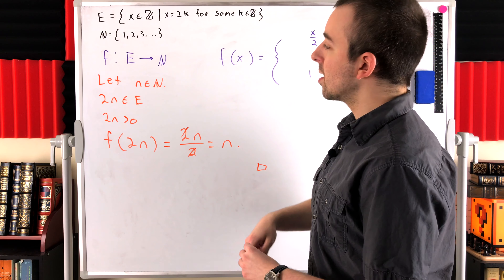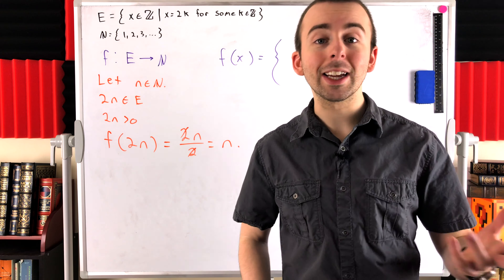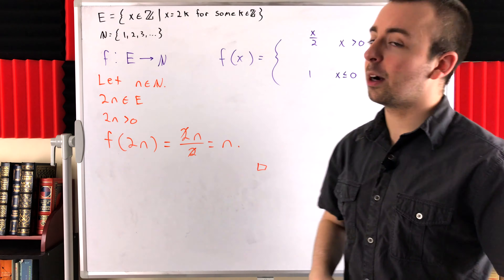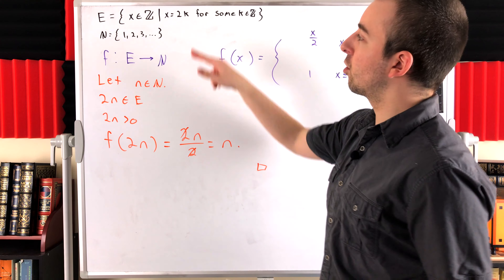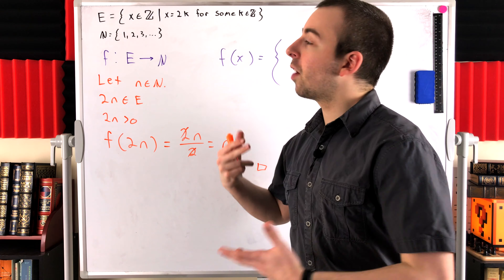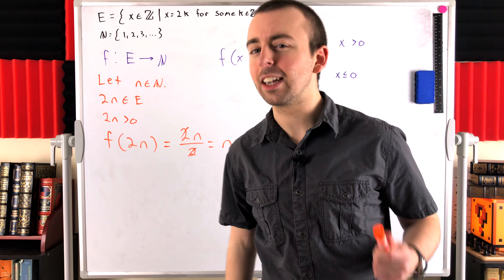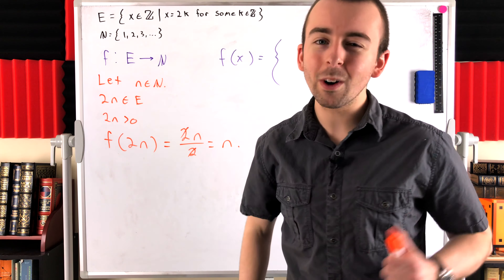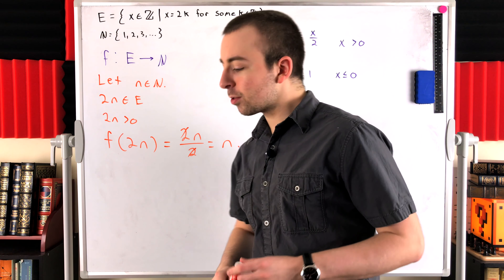For example, you give me 7 in the natural numbers — I can say plug in 14 into our function, that's going to spit out 7. So there is a surjection from the evens to the naturals. This function hits every single natural number, so of course there must be as many or more even numbers than there are natural numbers.